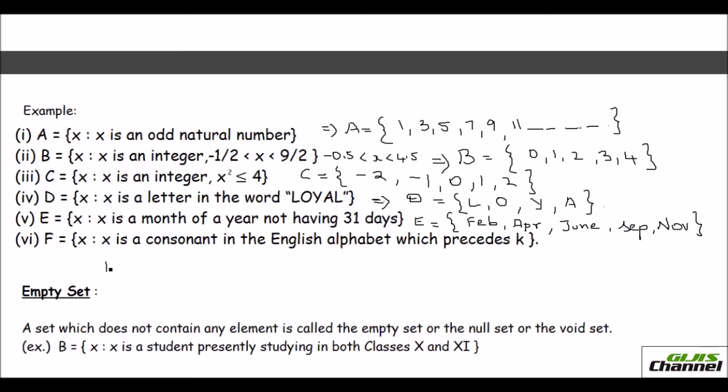Now finally F. They say F is a consonant in the English alphabets. So what are the consonants? All the letters other than vowels. But they say the consonant which precedes K, the letter K. So you can't go beyond that. Write the consonants which precede K. So A is a vowel, B, C, D, E is a vowel. A, B, C, D, E, F, G, H, I is a vowel, J. And then you have K. You can't write K because you stop with the letter which precedes K. So this is how you write it in the roster form.